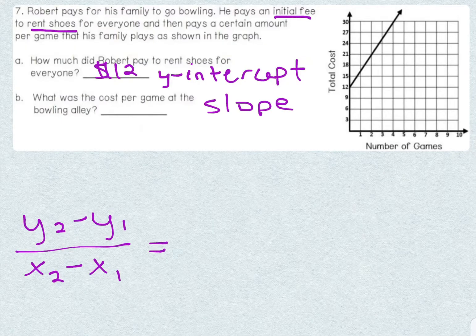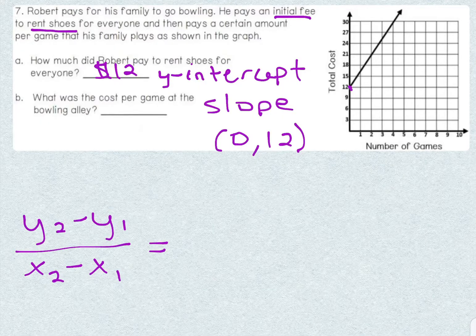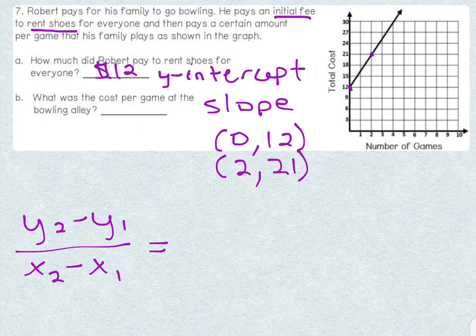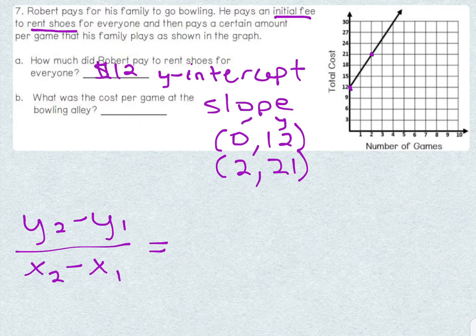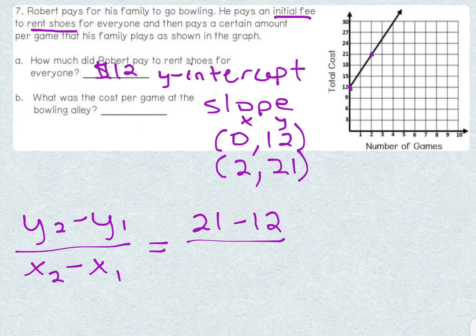where we take y₂ minus y₁ over x₂ minus x₁ to find the change in y over the change in x. We already found our y-intercept — that point is (0, 12). And if I go along my line, the next point that would be good to use is (2, 21) because it lands on two whole numbers. By writing out the points and using the slope formula, we'll be more likely to avoid counting incorrectly. We can start with our y values on top and x values on the bottom, and find the difference. That gives us 21 minus 12 over 2 minus 0. When we subtract, we get 9 over 2.